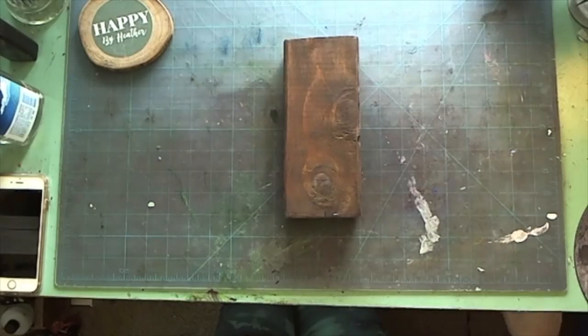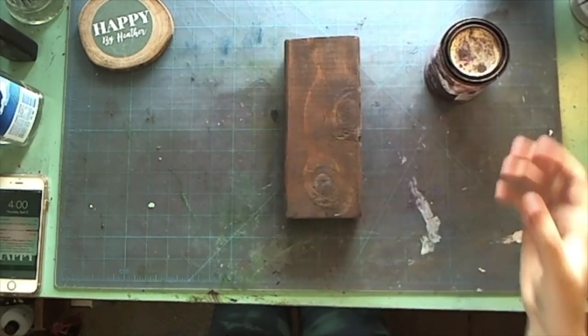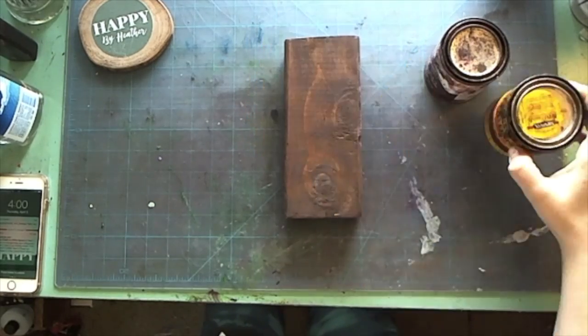First prep your wood. I stained mine with a black cherry and a walnut stain to get this look right here.